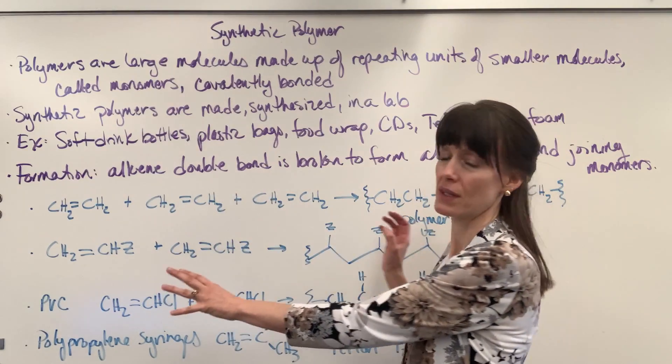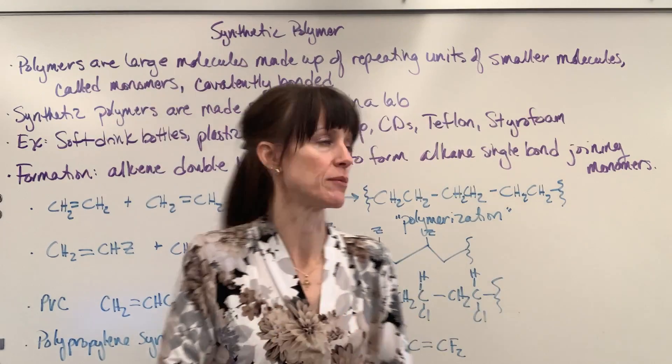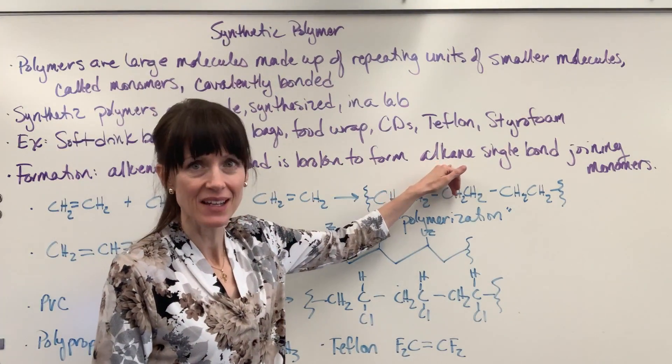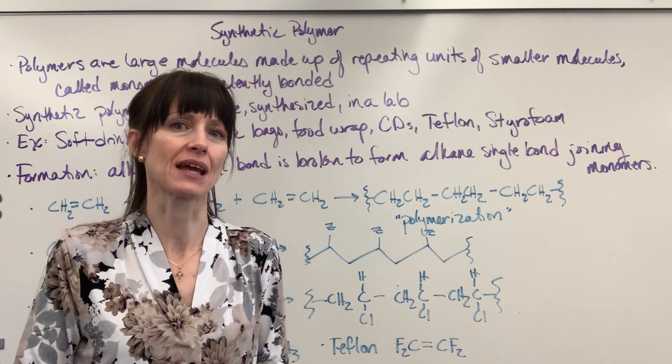So let me give you the overview of how these work. The basic formation. You take an alkene that has the double bond. You're going to break that and form an alkane that forms that single bond and then you just join these monomers together, these small units together.